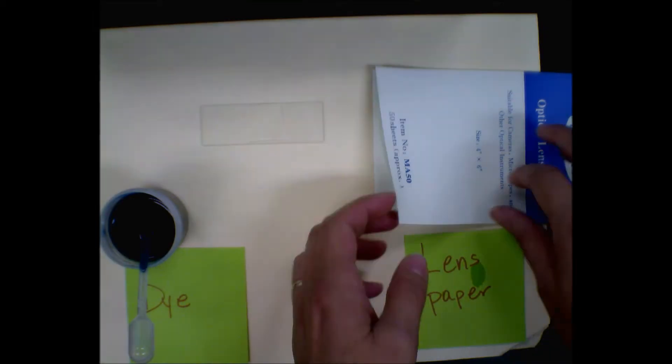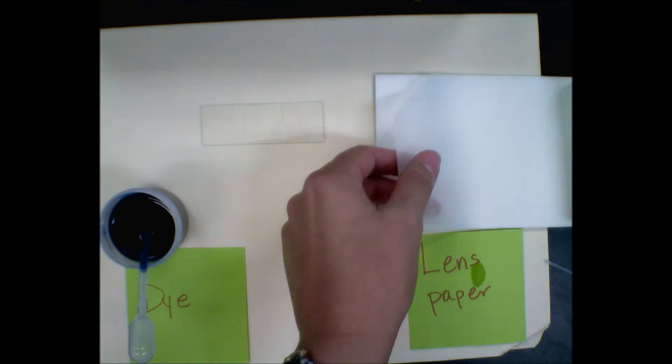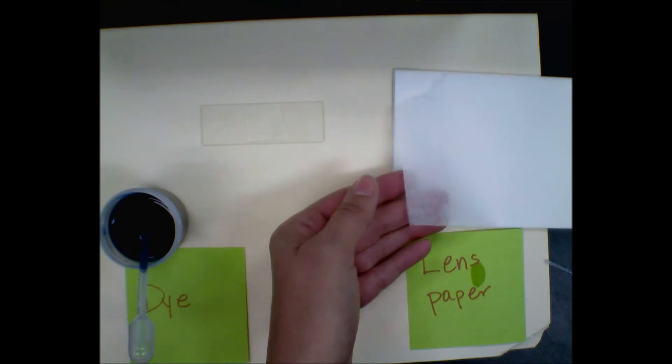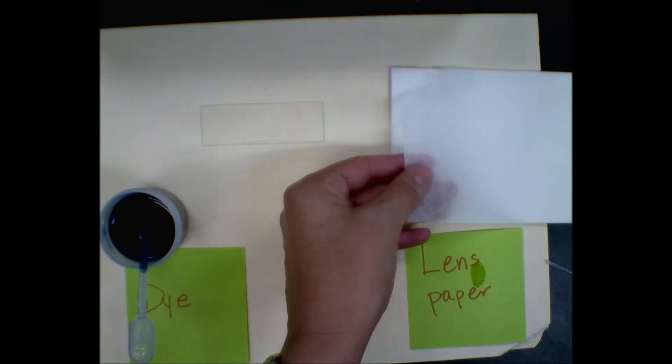We need to stain the cells so that we can see them better underneath the microscope. Lens paper is special paper. It doesn't put any lint on any of your glassware like your microscopes or your slides, so it's very handy in that respect.